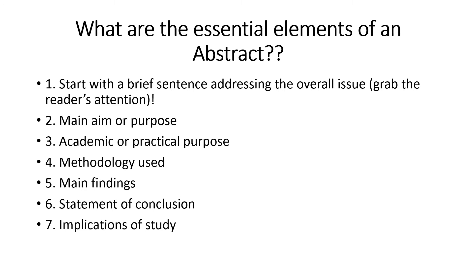Remember, an abstract will ideally be around 150 to 250 words depending on what kind of paper or thesis you're writing. Journal abstracts vary between 150 to 250 depending on the journal you're writing for — I'm assuming you will not get more than this.